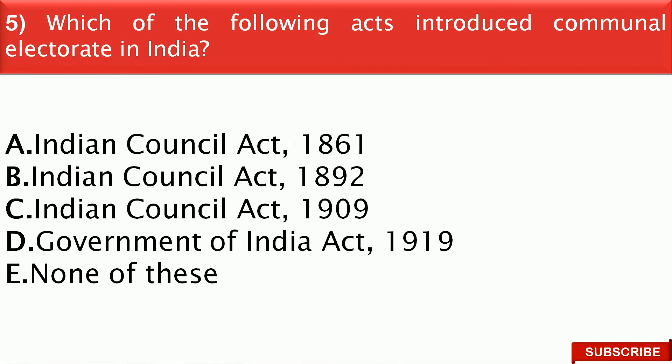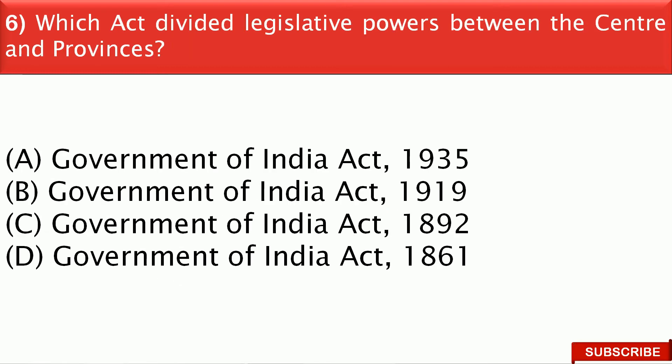Next question: Which of the following acts introduced communal electorate in India? The right answer is option C — that is the Indian Councils Act 1909. Next question: Which act divided legislative powers between the center and provinces? The right answer is option A — that is the Government of India Act 1935.